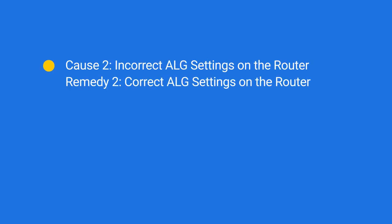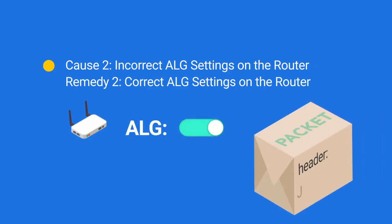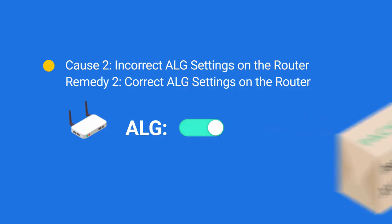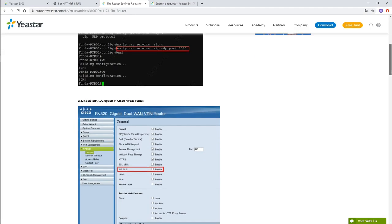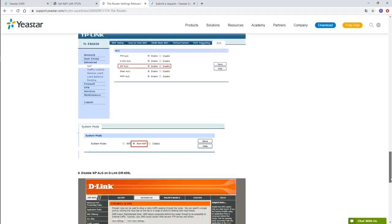Now let's move on to the second cause and correct the ALG setting on the router. ALG is a feature that helps voice devices traverse internet environments by modifying the IP address in SIP packet headers. If not configured correctly, the PBX or remote extension will send RTP packets to the wrong address. To fix this, simply make sure the ALG setting on the router is disabled. For settings on different router brands, refer to the articles in our knowledge base.